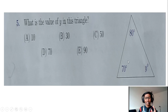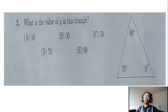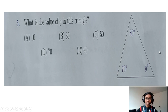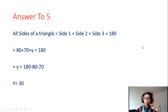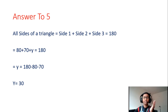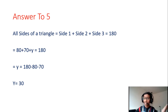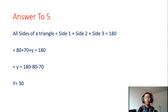Question number five: what is the value of y in this triangle? We all know that all the angles in a triangle must equal 180 degrees — that's our basic formula. So 80 plus 70 plus y equals 180. You add 80 and 70 to get 150, then 180 minus 150 equals 30. So y equals 30.